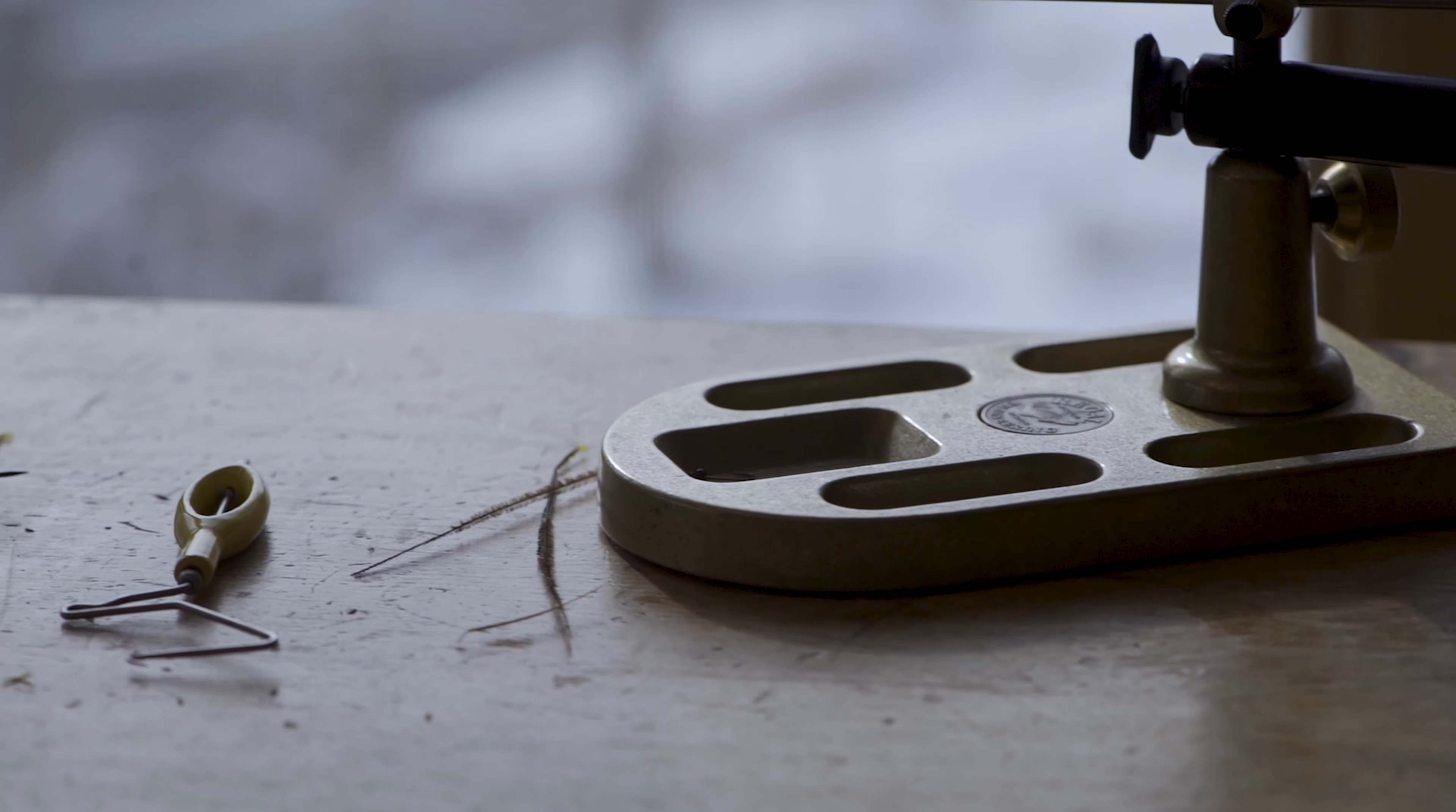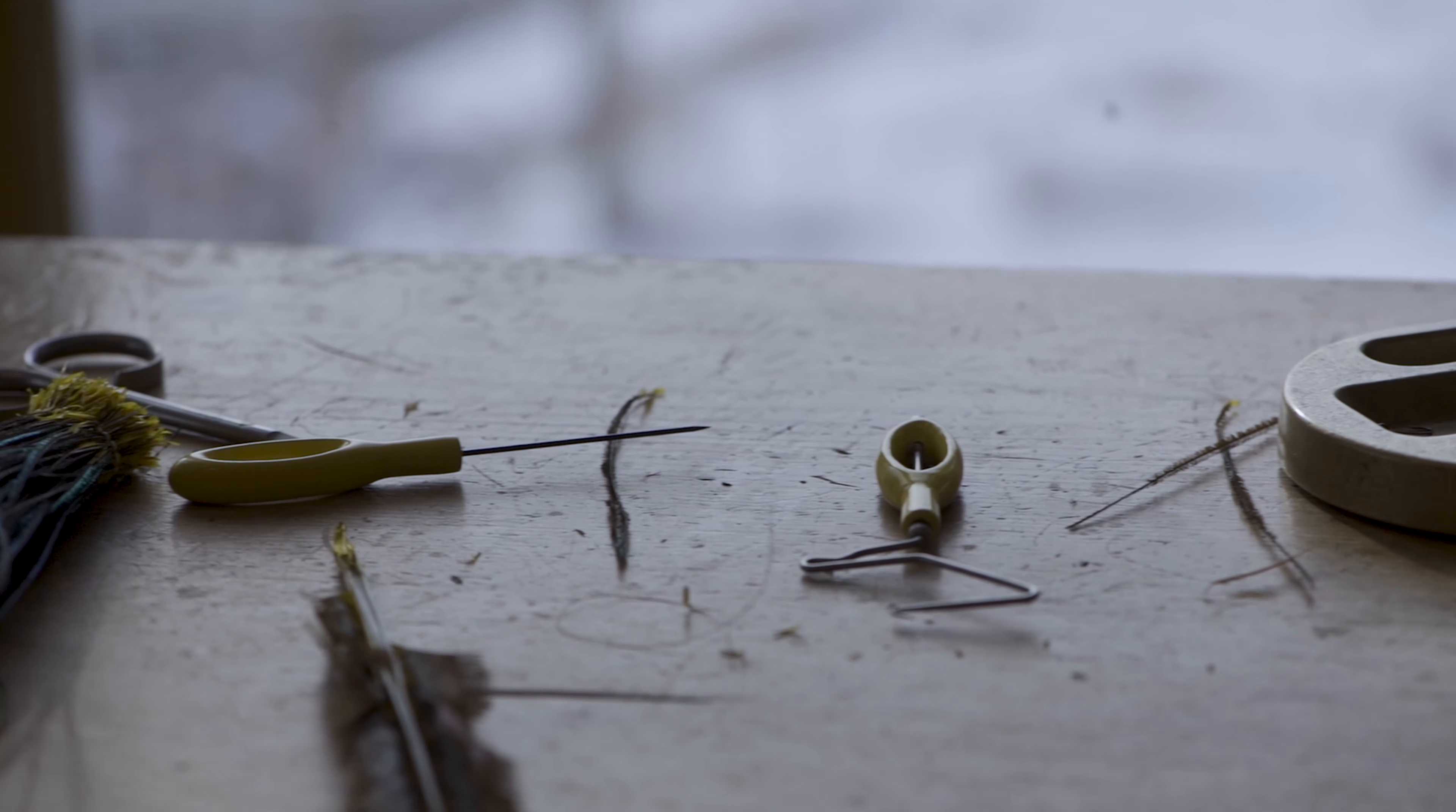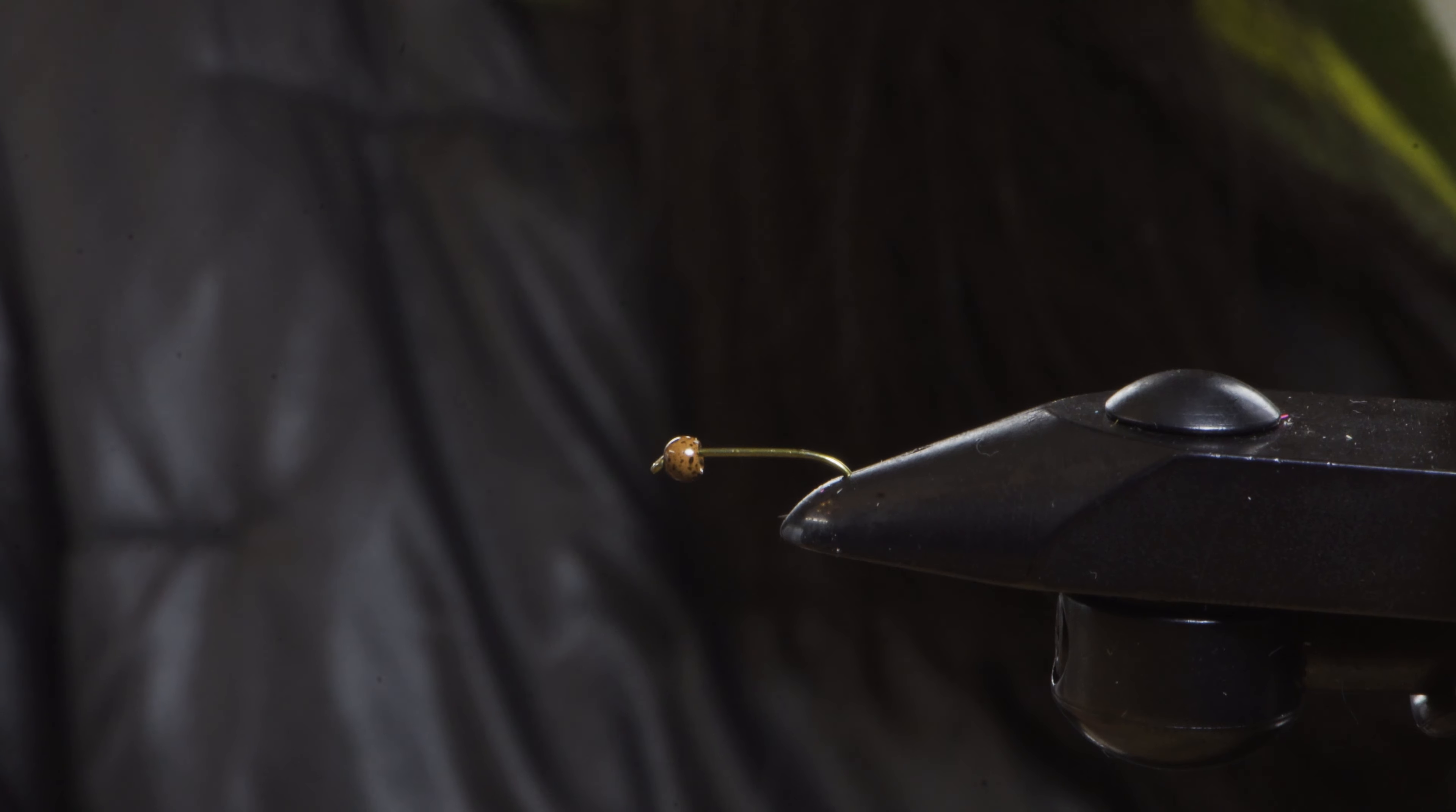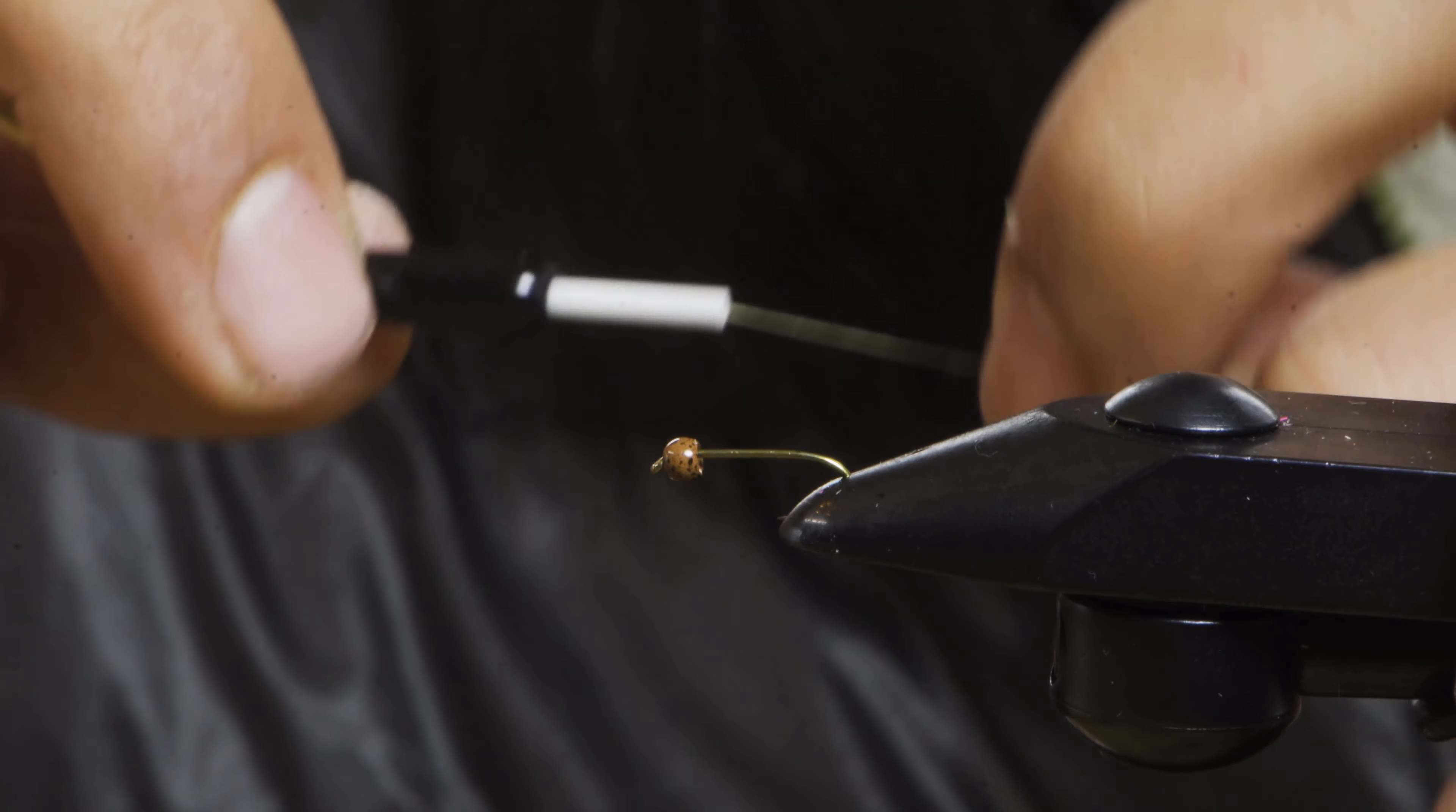So this is going to be a variation on a pheasant tail using a brown model bead. A little less flash, a little more natural coloration. The hook I'm using is a Tienko 3761. Long shank, fairly stout wire, so it's not going to bend out as quick as something with only a standard sized wire.